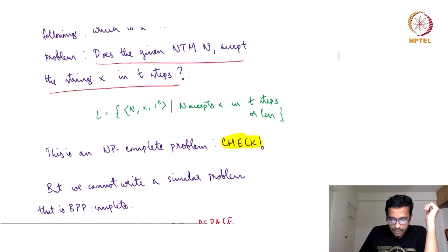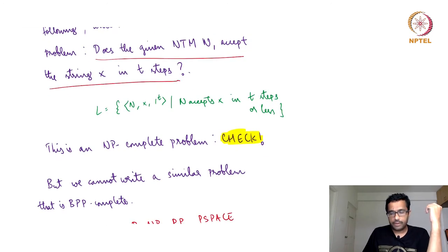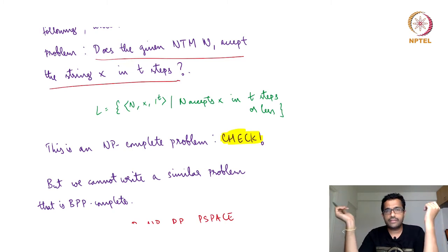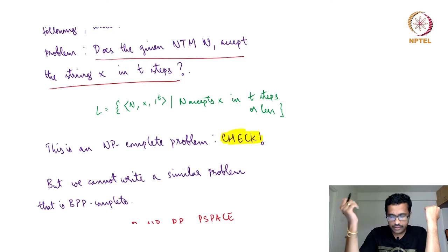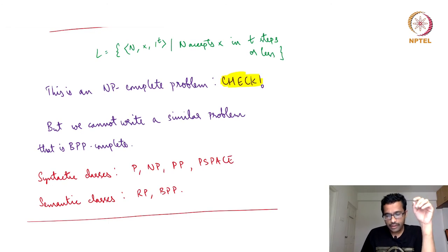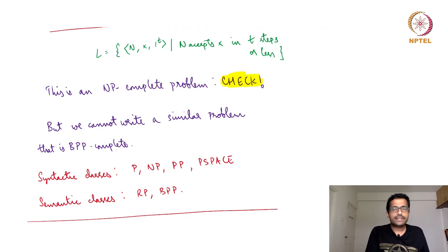The problem is this is an NP-complete language. We cannot write a similar BPP-complete problem, because the problem of deciding whether a given Turing machine is a BPP decider is not decidable or computable. So we cannot write a similar problem that is BPP-complete. As of now, it is not clear how to get a language that is BPP-complete. If we go to promise problems, there is a way to write a BPP-complete promise problem. But as a language — a language is just a subset of sigma-star — we cannot write a language that is BPP-complete.